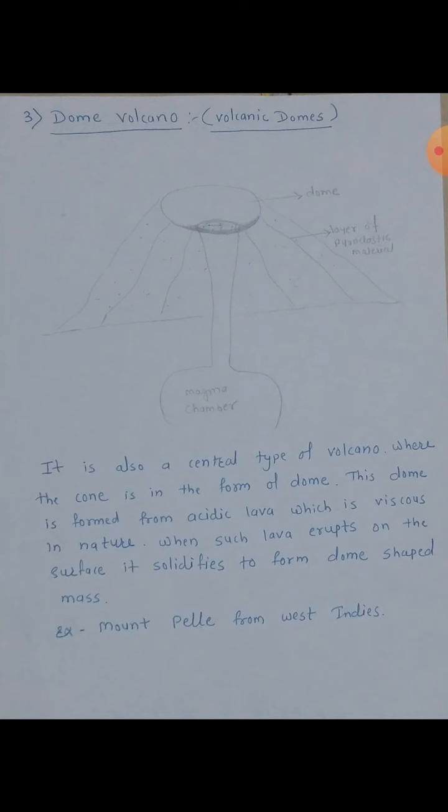When such lava erupts on the surface, it becomes solidified — manje javala lava, asha prakarcha lava javala surface var erupt hoto, toh ghatta banto, aani toh forms a dome-shaped mass. Hills arka ek structure form karto — khi jala apan dome volcano maantho, aar volcano no, aani dome. That's an example: Mount Pele from the West Indies.